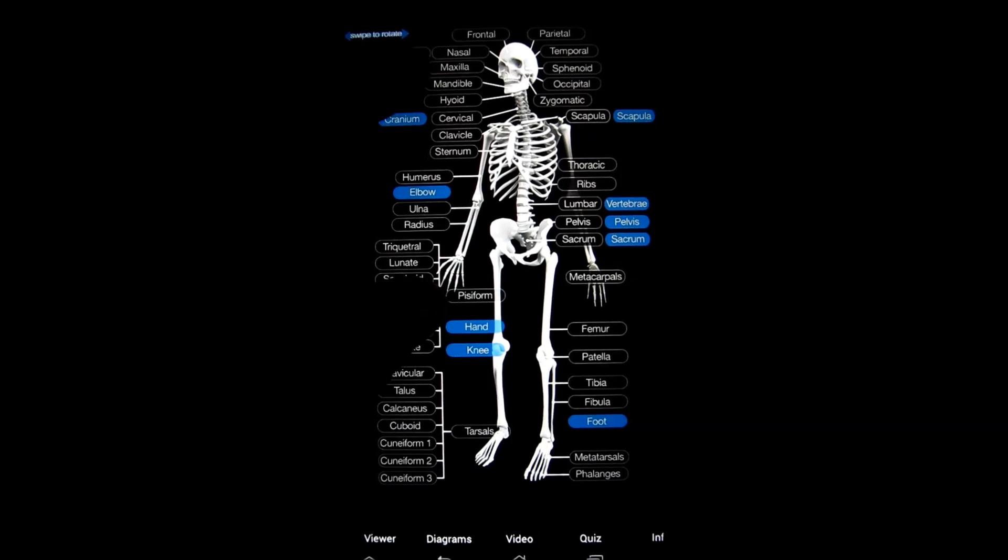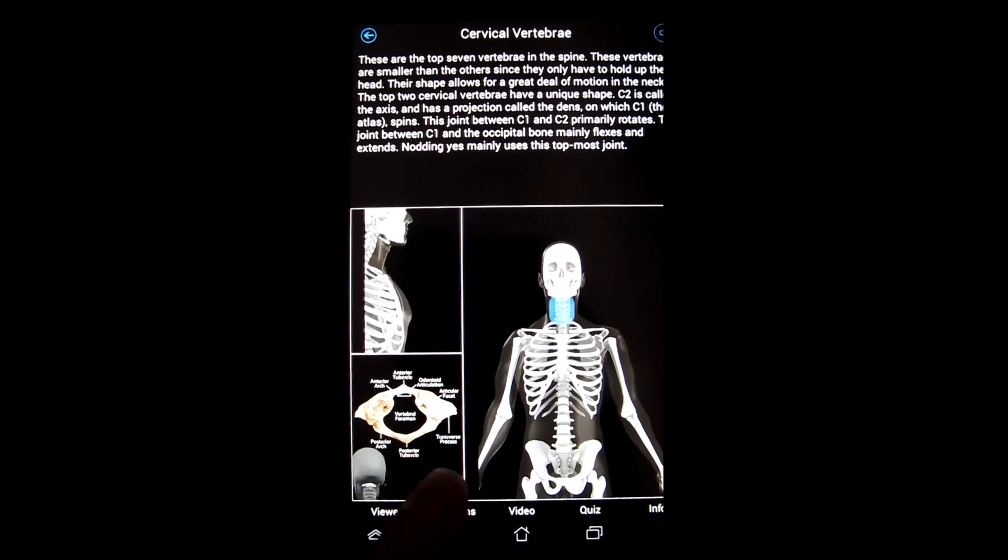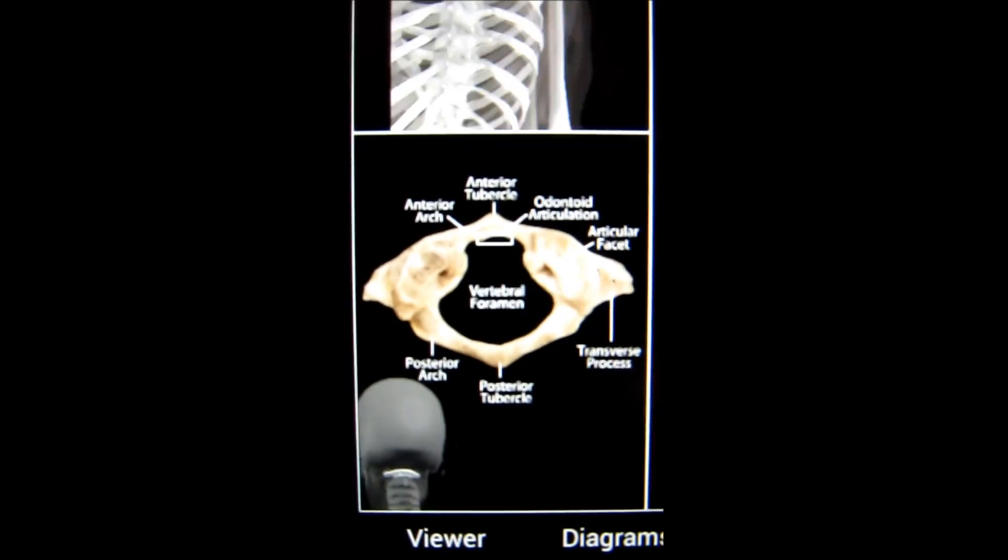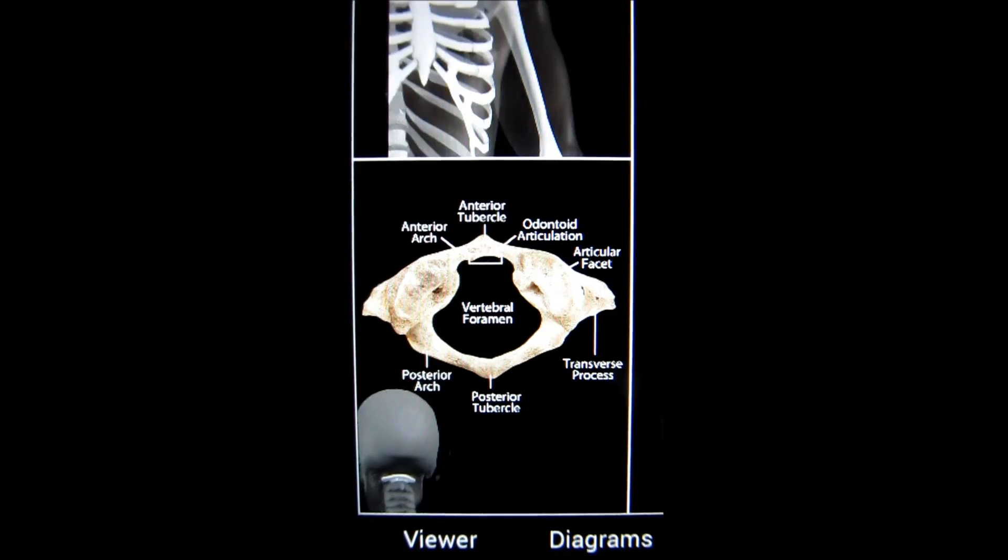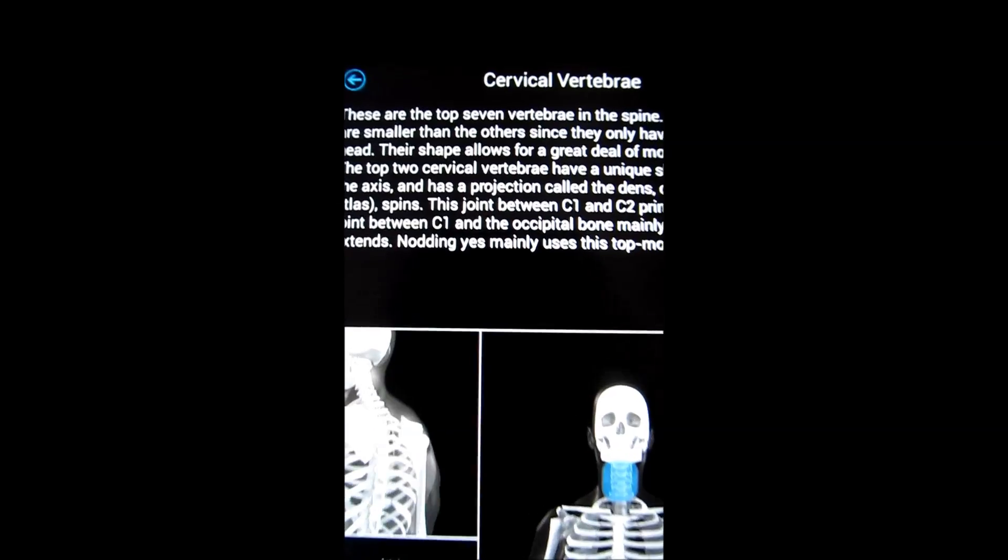You tap on let's say cervical and you can go see the cervical vertebrae. Learn more about them. See a nice close up photo of what they actually look like from anatomy thing. See what area is highlighted here and know where it's at. And read a good description of them.